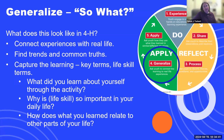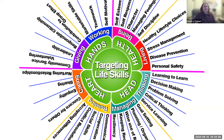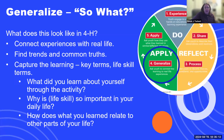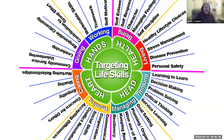Taking that back to the do-reflect-apply model, we think about how the do can be applicable to other parts of life. One tool you can keep on hand is the targeting life skills model, developed by 4-H workers in Iowa. Going back to those questions — why is this life skill important to your daily life? — you could ask things like how is leadership important to your daily life? Or how is keeping yourself safe important to your life? Or how is resiliency important? It gives you some words to really think about.